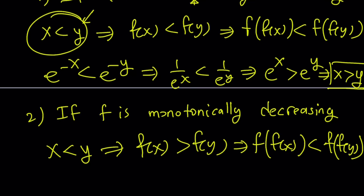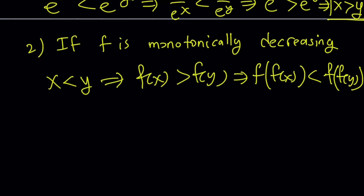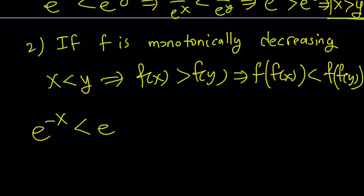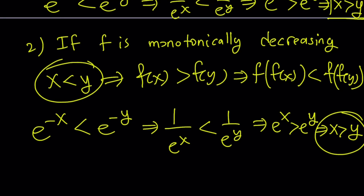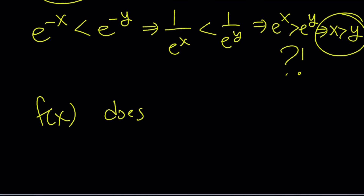This means 1 over e to the x is less than 1 over e to the y. Since e to the x and e to the y are always positive, taking reciprocals reverses the order: e to the power x is greater than e to the power y. Since e to the power x is monotonically increasing, this implies x is greater than y. Again we arrive at a contradiction — we started with x less than y. This means we cannot find a function that satisfies the criteria. In other words, f of x does not exist; there is no solution that satisfies this equation.